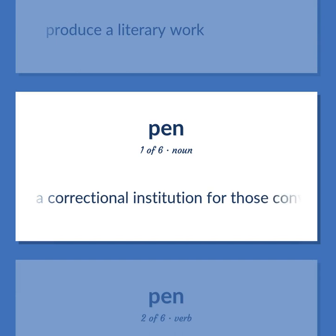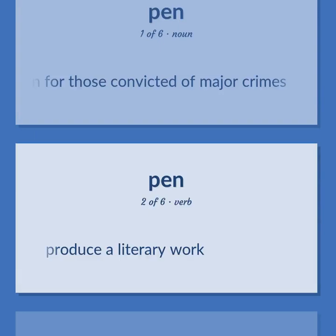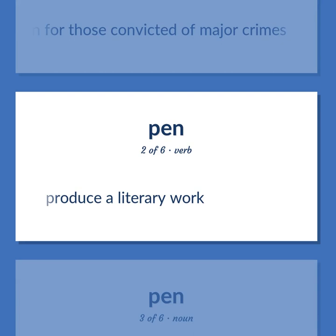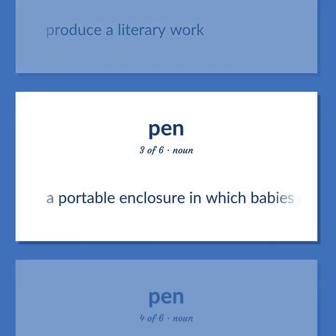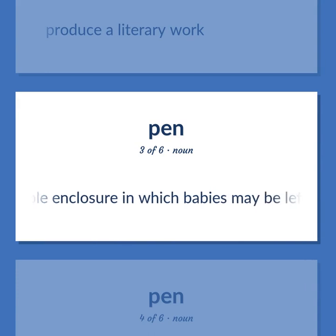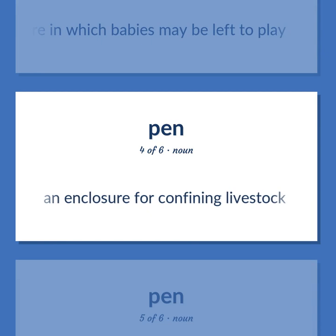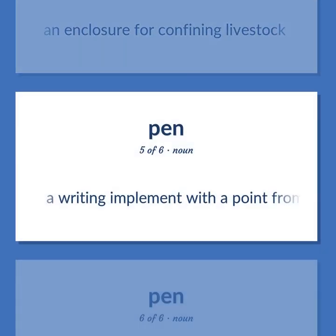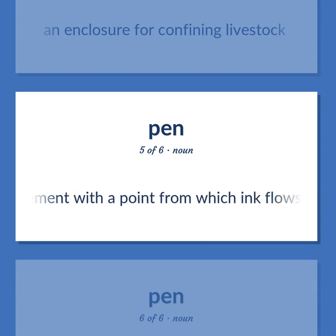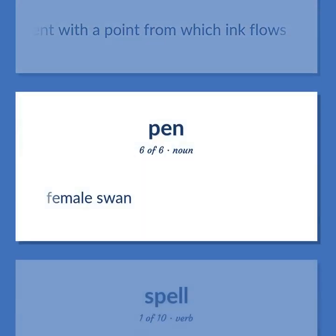Pen: A correctional institution for those convicted of major crimes. Produce a literary work. A portable enclosure in which babies may be left to play. An enclosure for confining livestock. A writing implement with a point from which ink flows. Female swan.